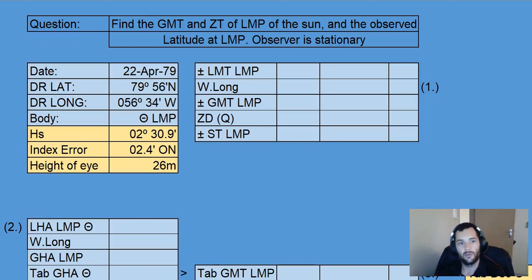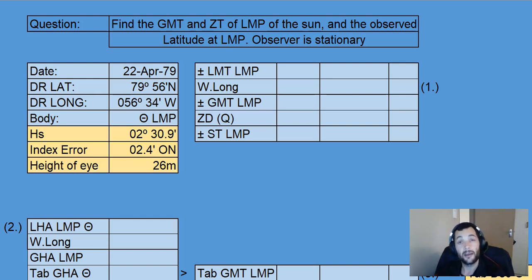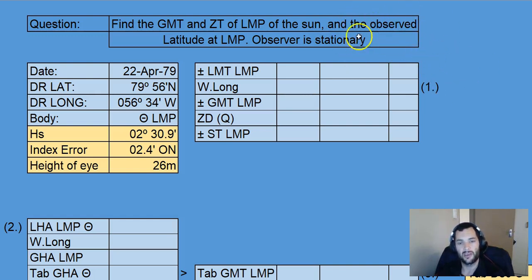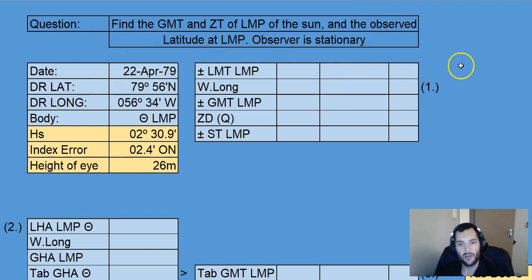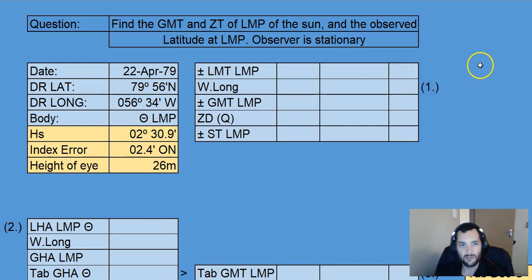Hi guys, welcome back to All Things Nautical. In this video, we'll be having a look at finding the approximate time and also time to the nearest second in GMT and zone time for lower meridian passage of the Sun. The question actually asks something extra — it also asks us to find the observed latitude at lower meridian passage. The question works very similar to what we've done before, with the addition of now finding the observed latitude.